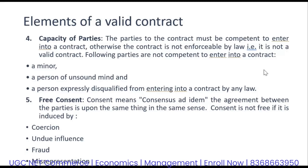The fifth element is free consent. Consent means consensus ad idem — the agreement between the parties upon the same thing and in the same sense. Consent is not free if it is induced by coercion, undue influence, fraud, or misrepresentation. The parties involved should give their consent without any coercion, undue influence, fraud, or misrepresentation — it should be free from all four of these.